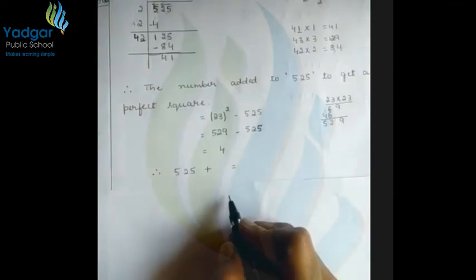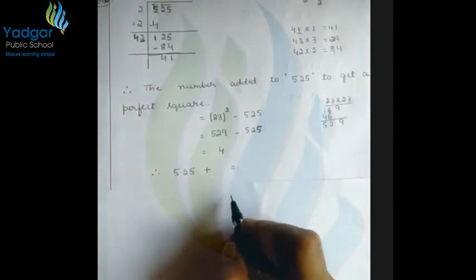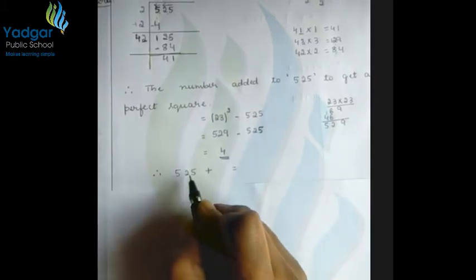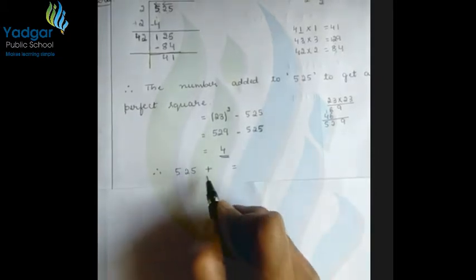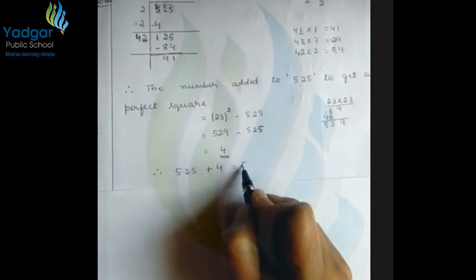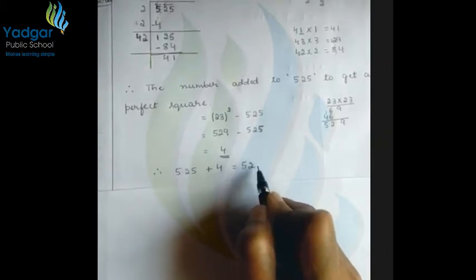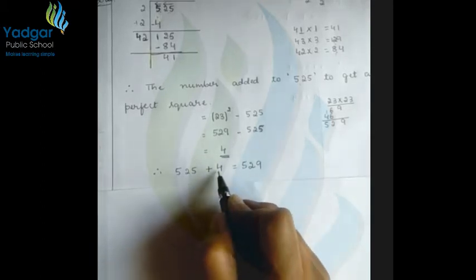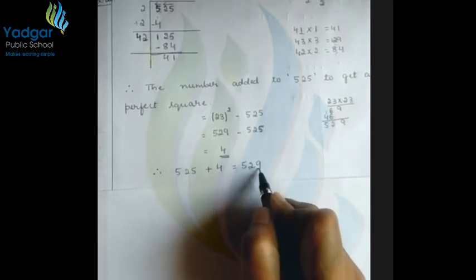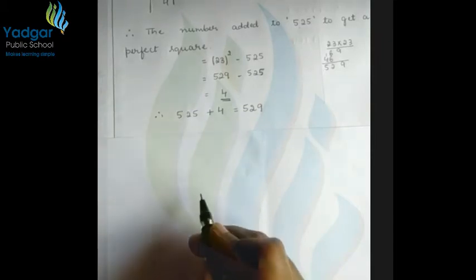The number you have to add is 4. Since we got 4 as the difference, 525+4=529. Now we have to find the square root of 529 by using the division method.